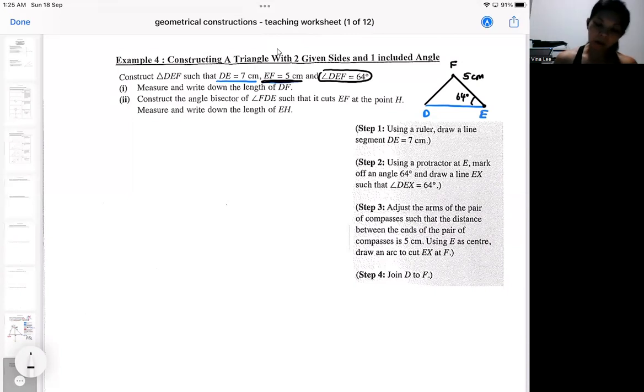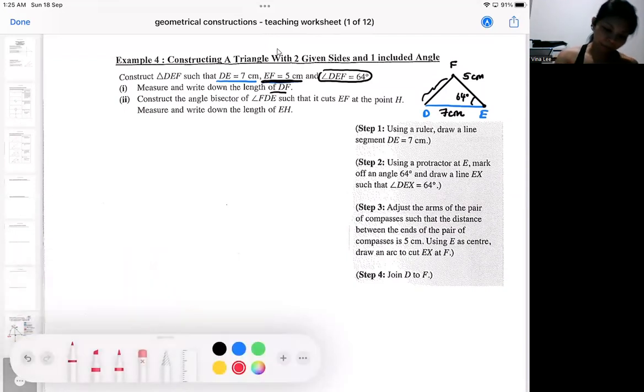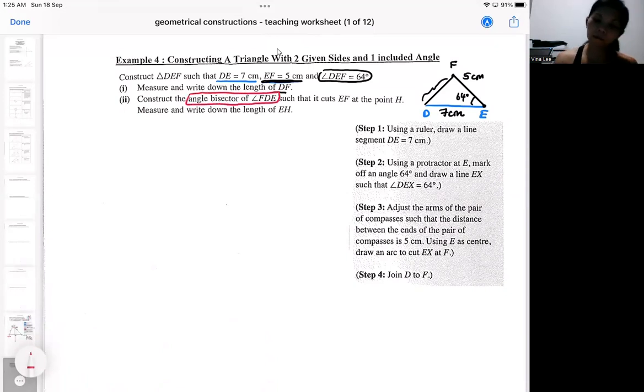And again they ask you to measure the length of DF. So the measuring is to make sure that you do check your accuracy. After that we got the angle bisector. Which angle are we bisecting? Which angle are we cutting into half? So it's FDE. This is the angle. So later on I'm cutting it into half like this.